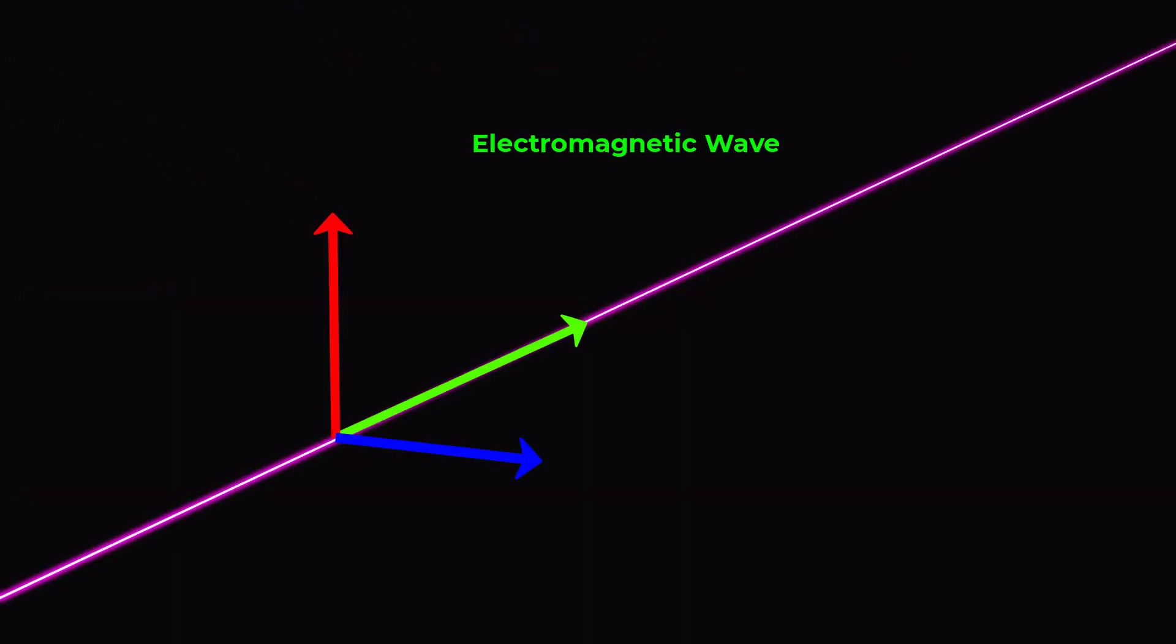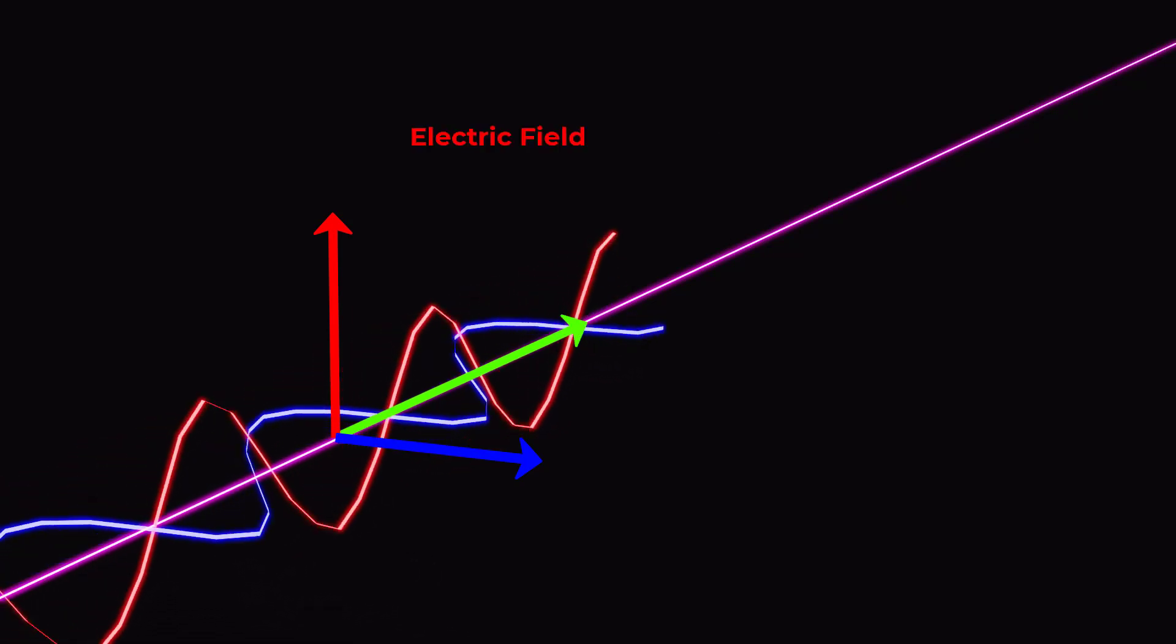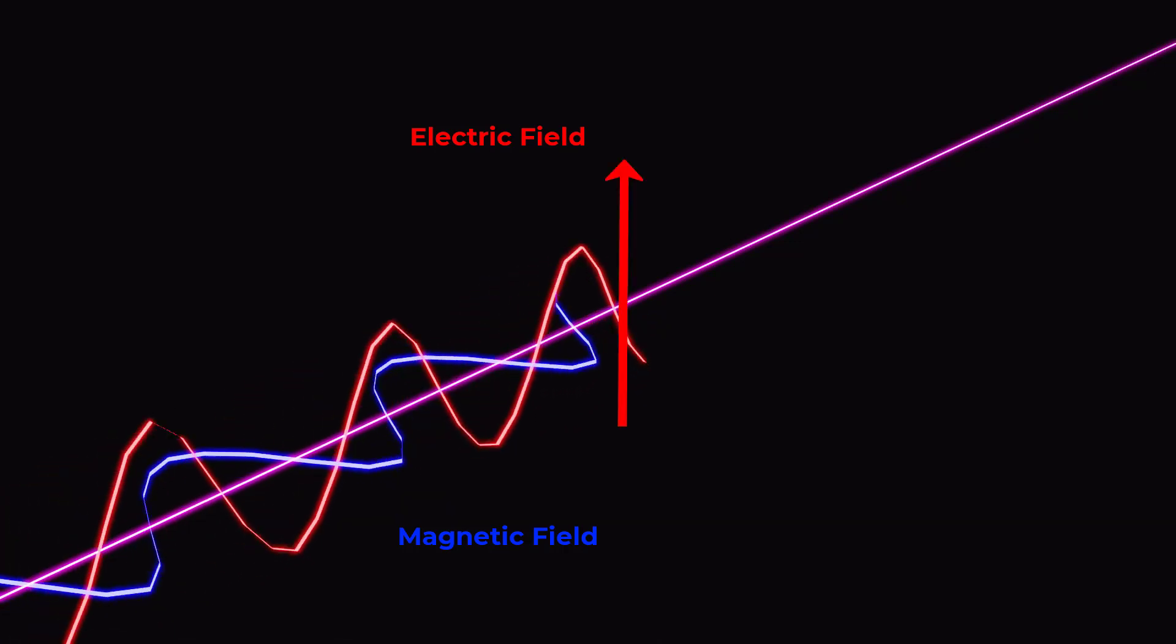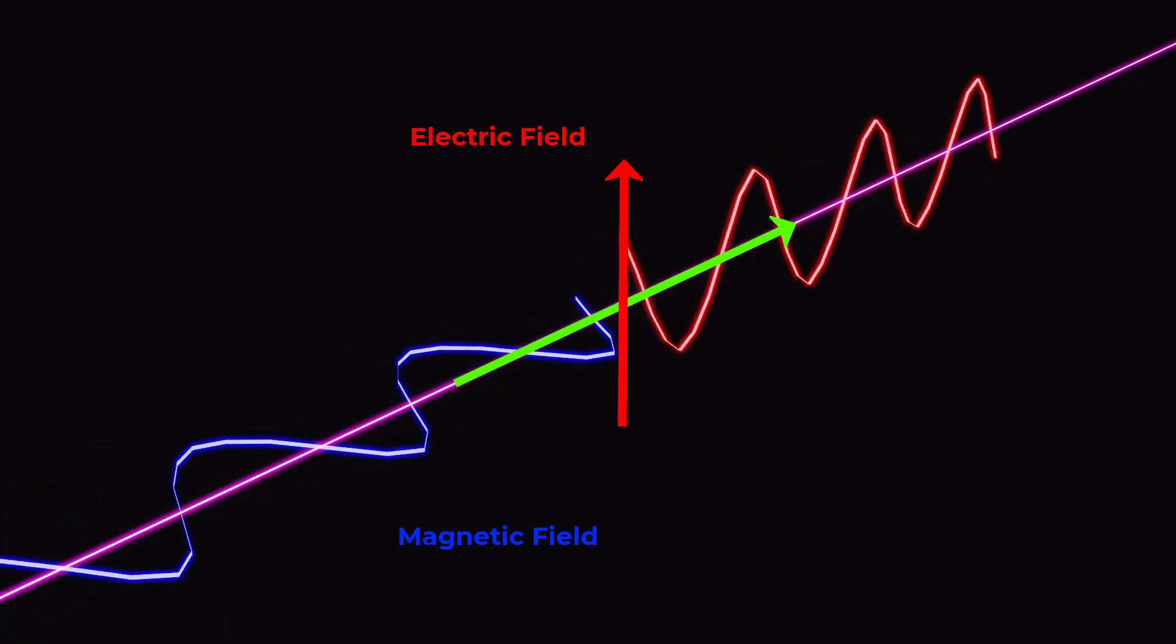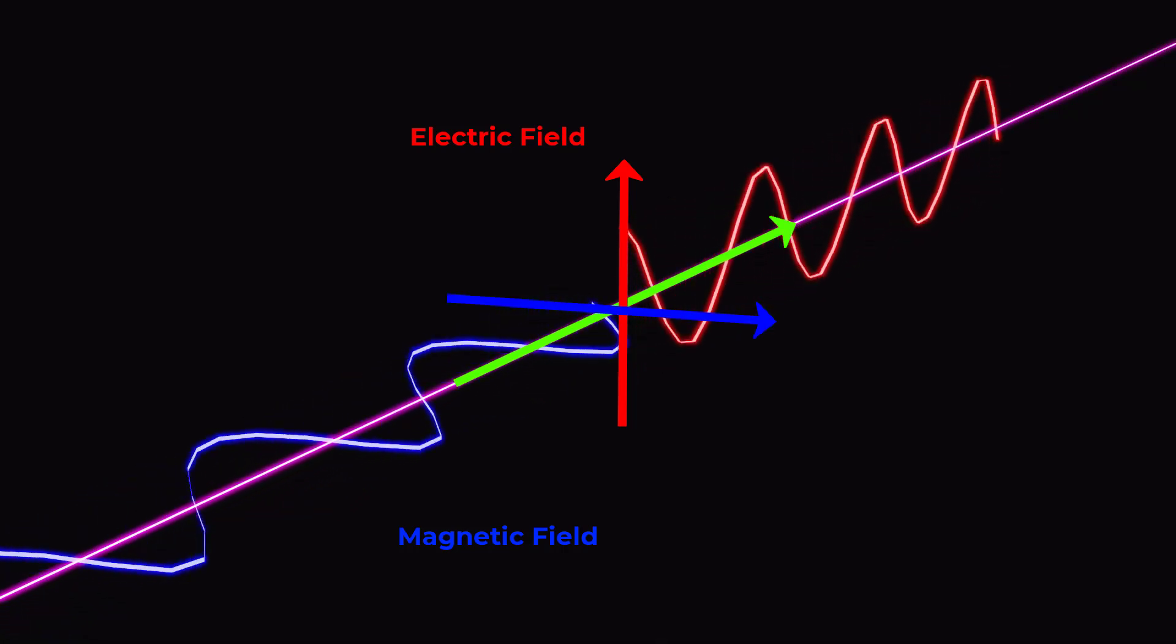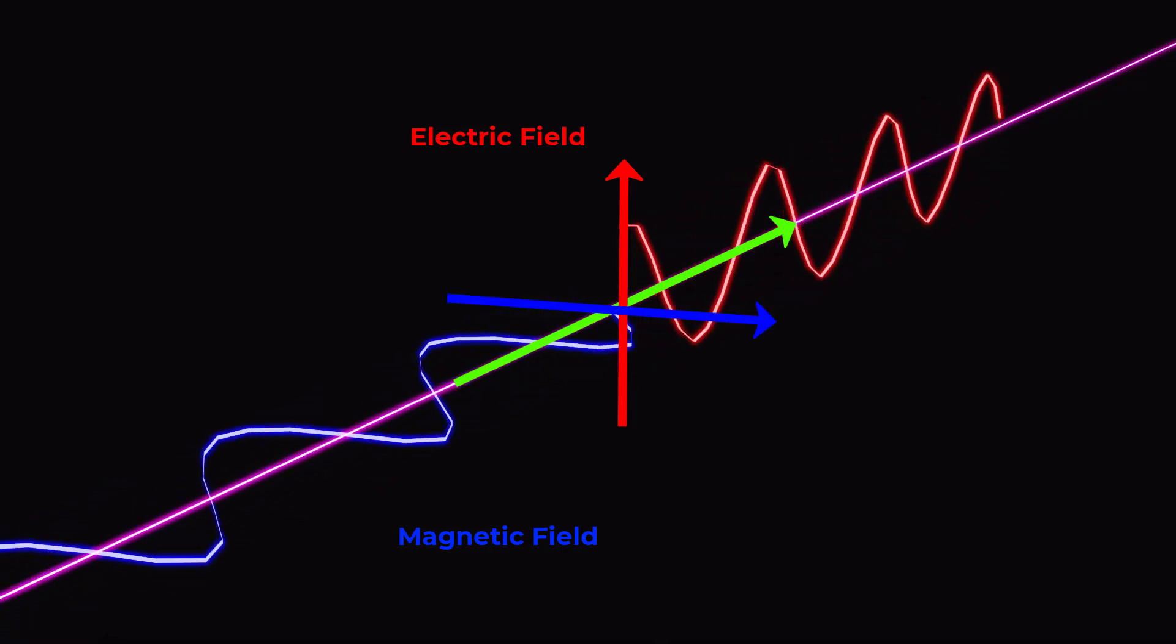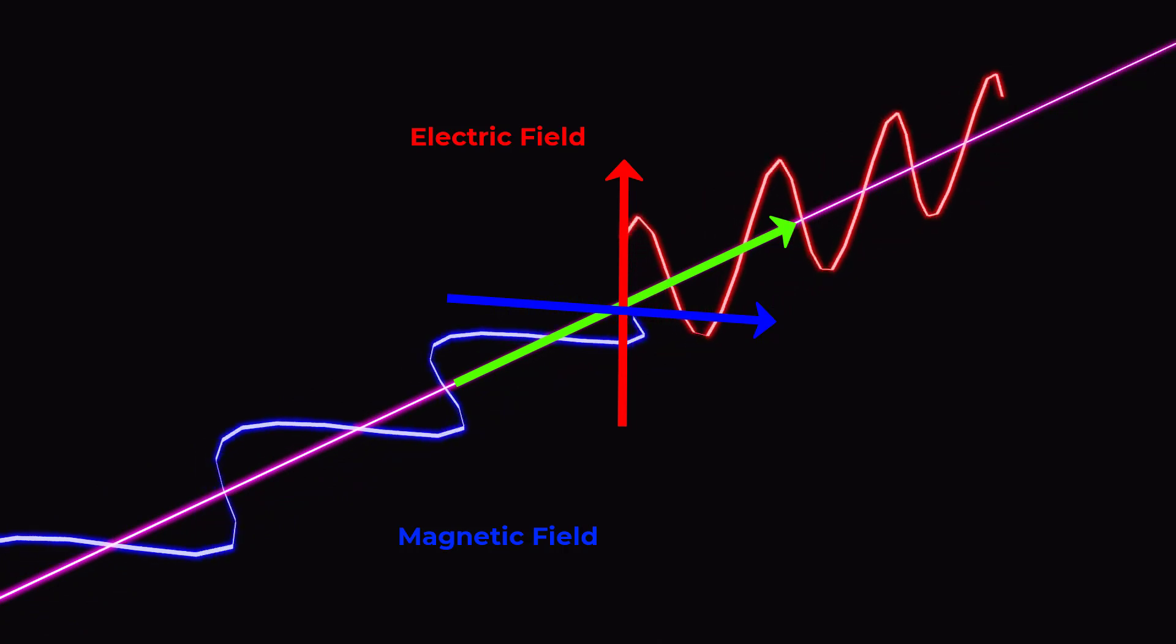Light is a type of electromagnetic wave, which means that it consists of oscillating electric and magnetic fields. The electric field oscillates perpendicular to the direction of propagation of the wave and the magnetic field oscillates perpendicular to both the electric field and the direction of propagation.